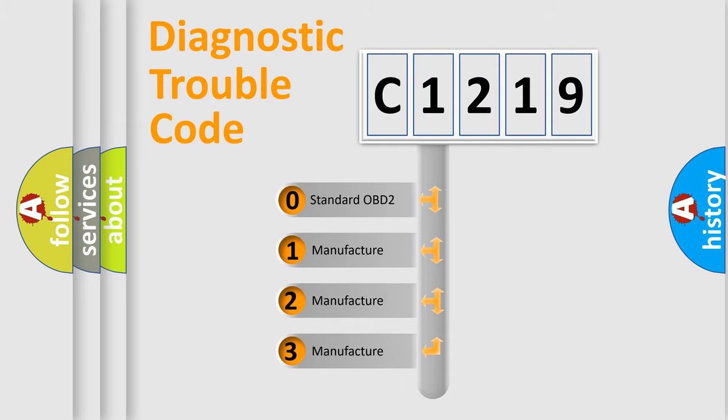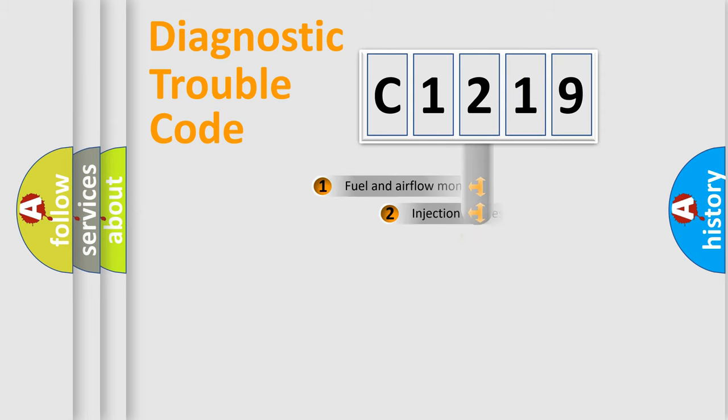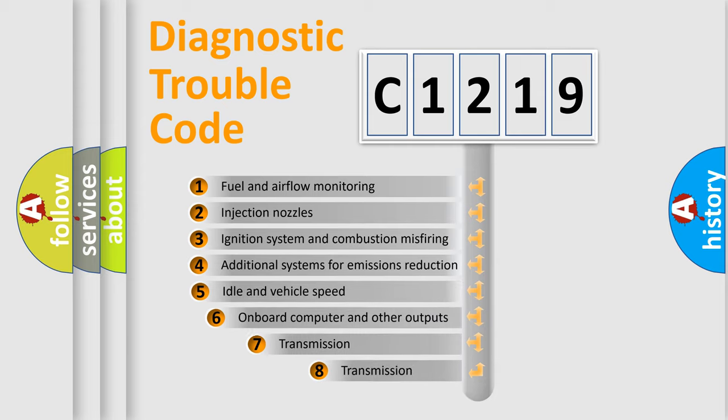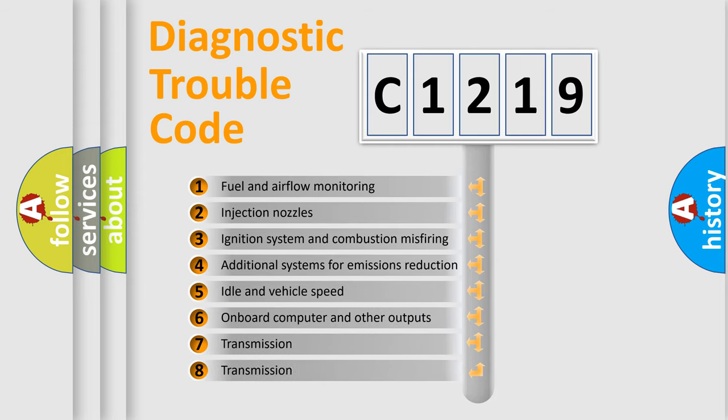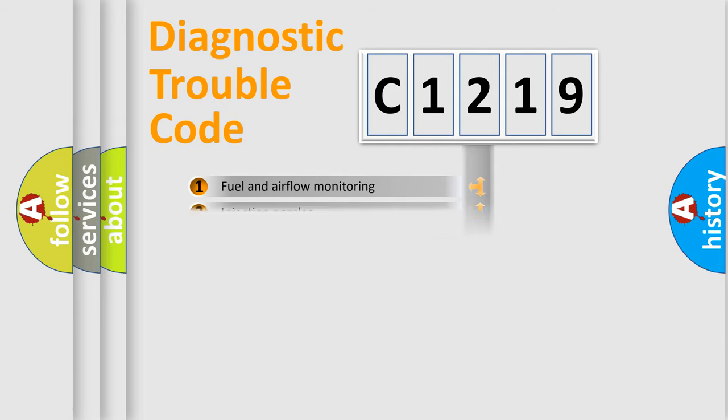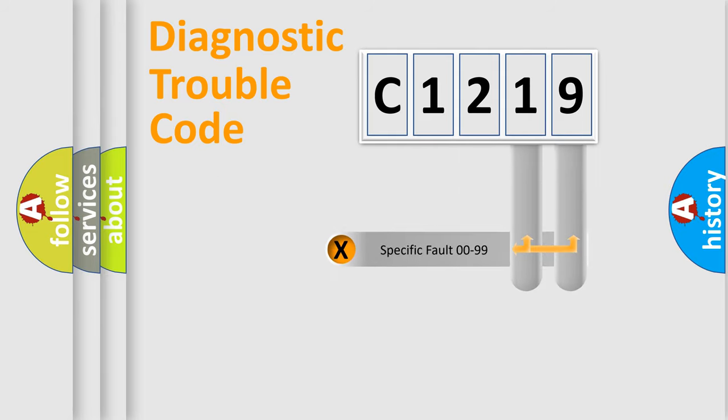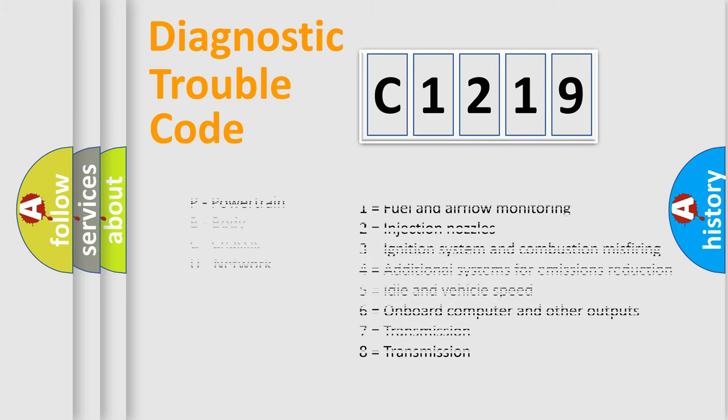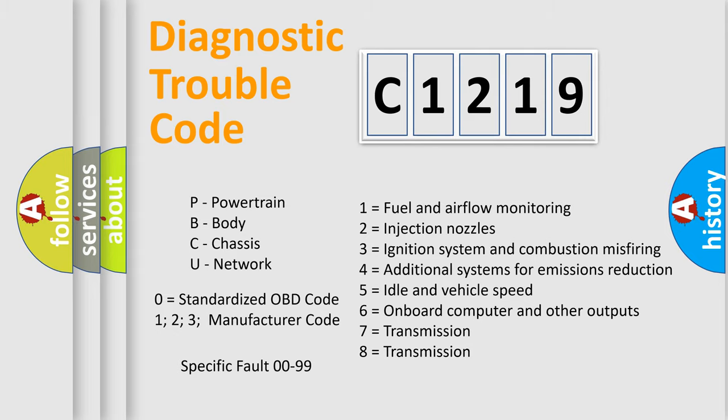If the second character is expressed as zero, it is a standardized error. In the case of numbers 1, 2, 3, it is a more prestigious expression of the car-specific error. The third character specifies a subset of errors. The distribution shown is valid only for the standardized DTC code. Only the last two characters define the specific fault of the group. Let's not forget that such a division is valid only if the other character code is expressed by the number zero.